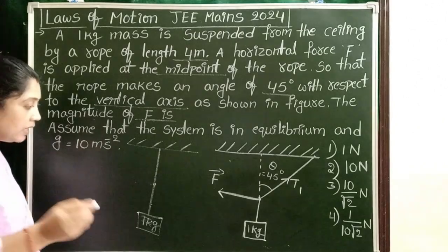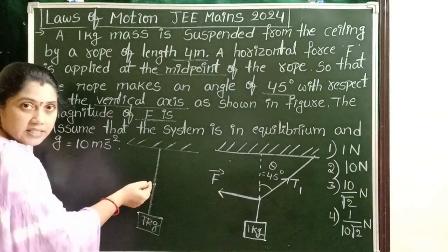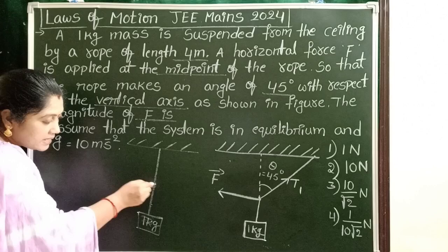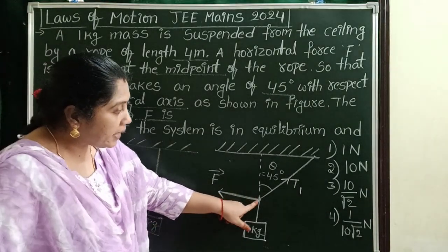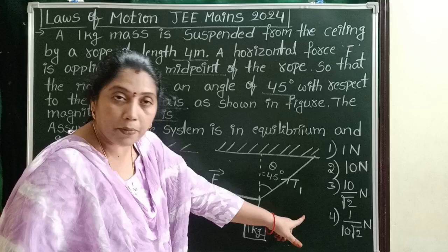And after that, this rope is pulled to one side exactly from the midpoint. This is the direction of the applied force. So this is the diagram. Initially, the rope is in vertical position.